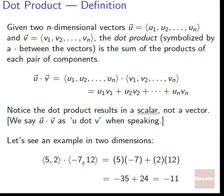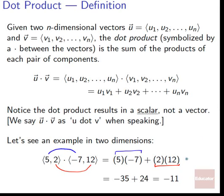Let's see an example in two dimensions. If we've got (5, 2) dotted with (−7, 12), we multiply the first components: 5 times −7, and add that to 2 times 12. So 5 times −7 gives us −35, plus 24, and finally we get −11 as our answer.